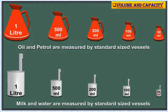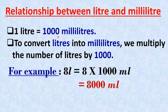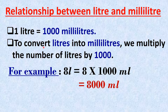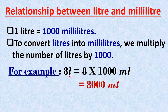Let us find the relationship between litre and millilitre. 1 litre is equal to 1000 millilitres. To convert litres into millilitres, we multiply the number of litres by 1000. For example, 8 litres is equal to 8 multiplied by 1000 millilitres.